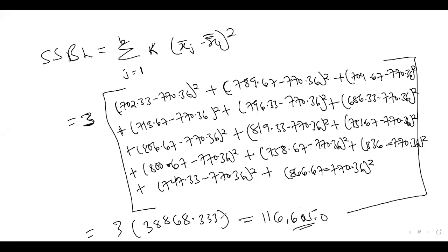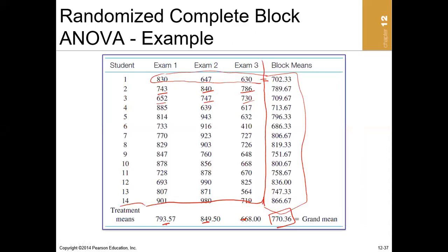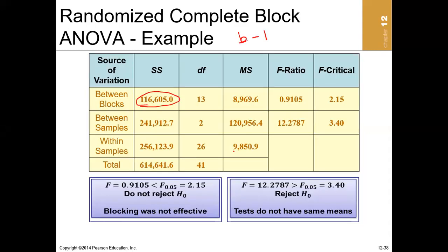The SS_block figure appears in the ANOVA table, and its degree of freedom is the number of blocks minus one. With 14 blocks, the degree of freedom is 13.